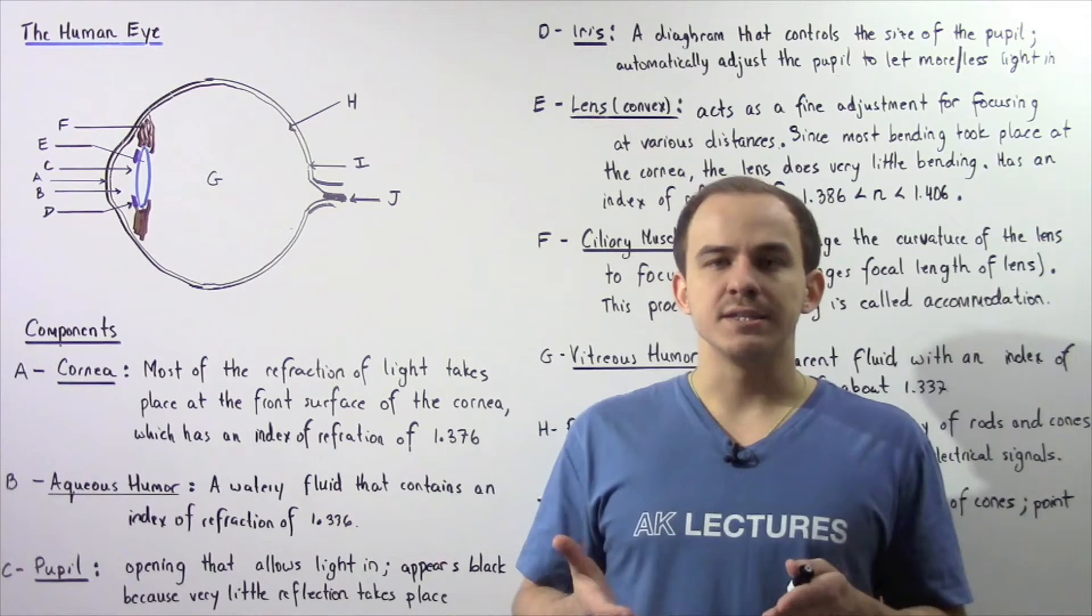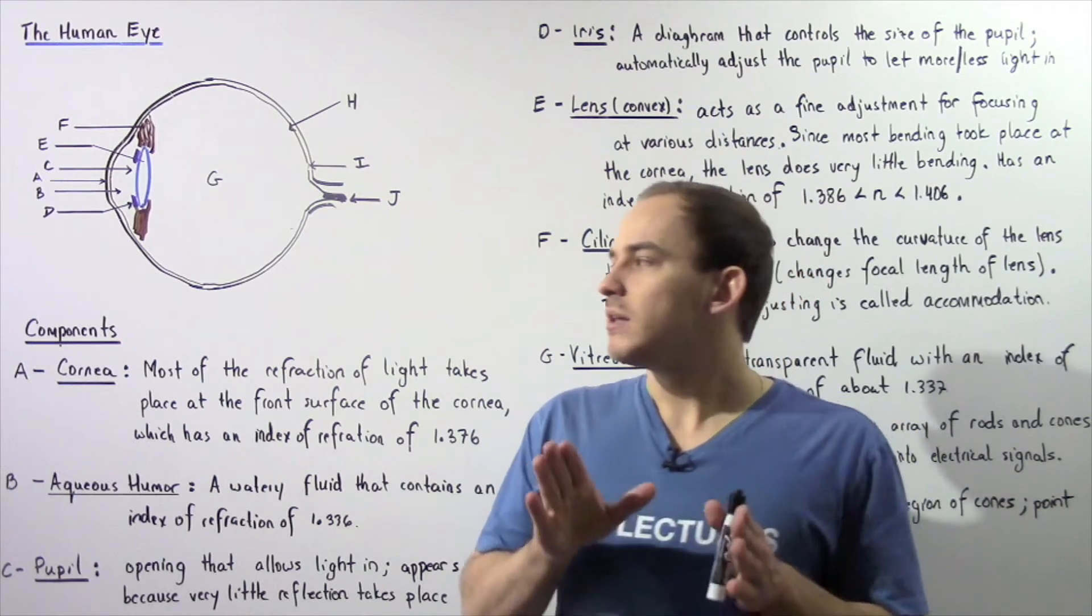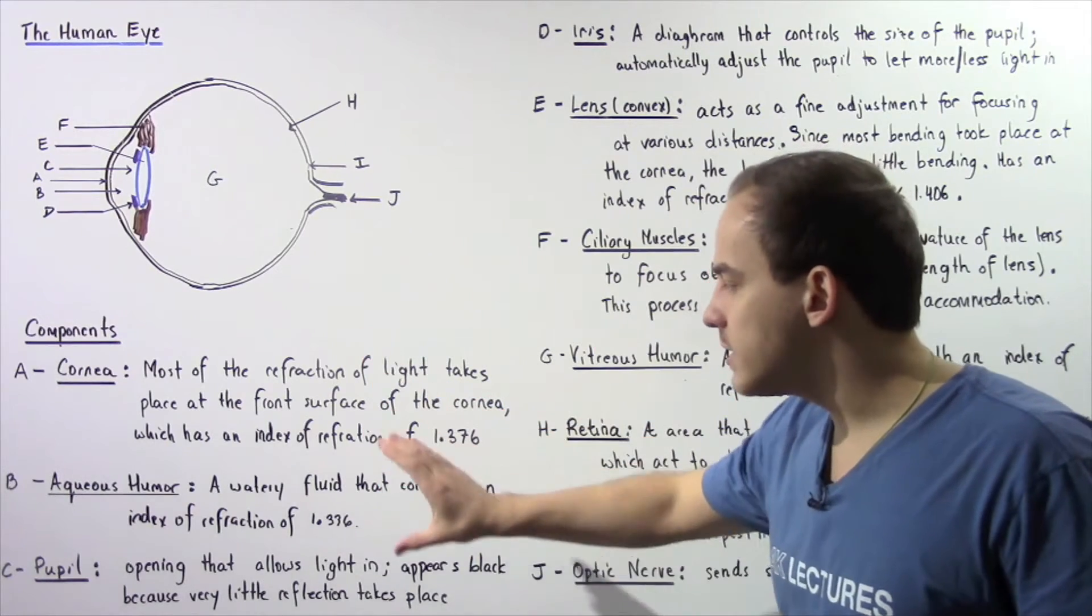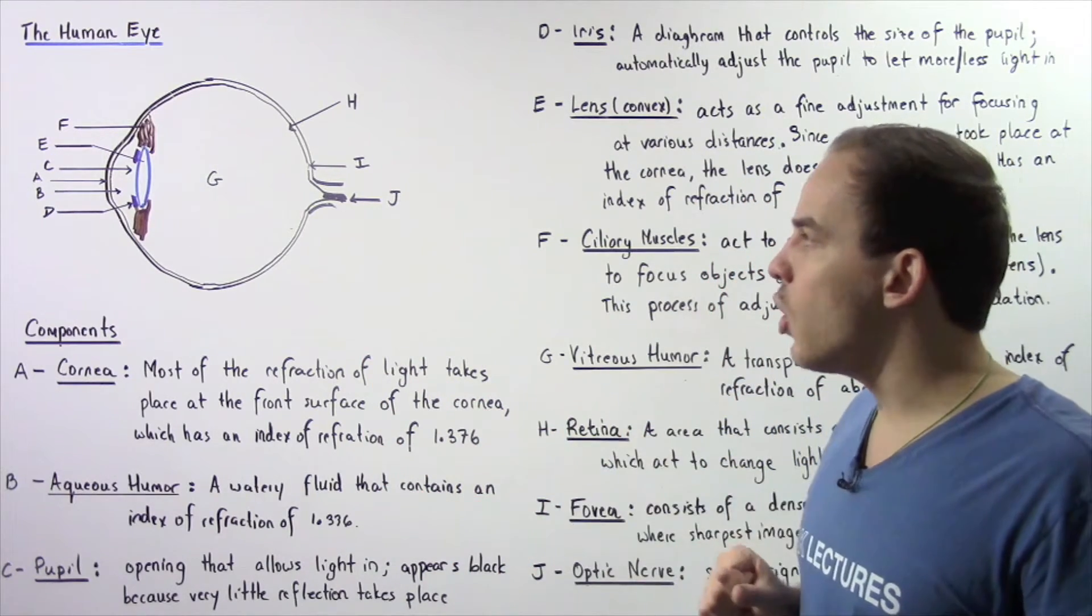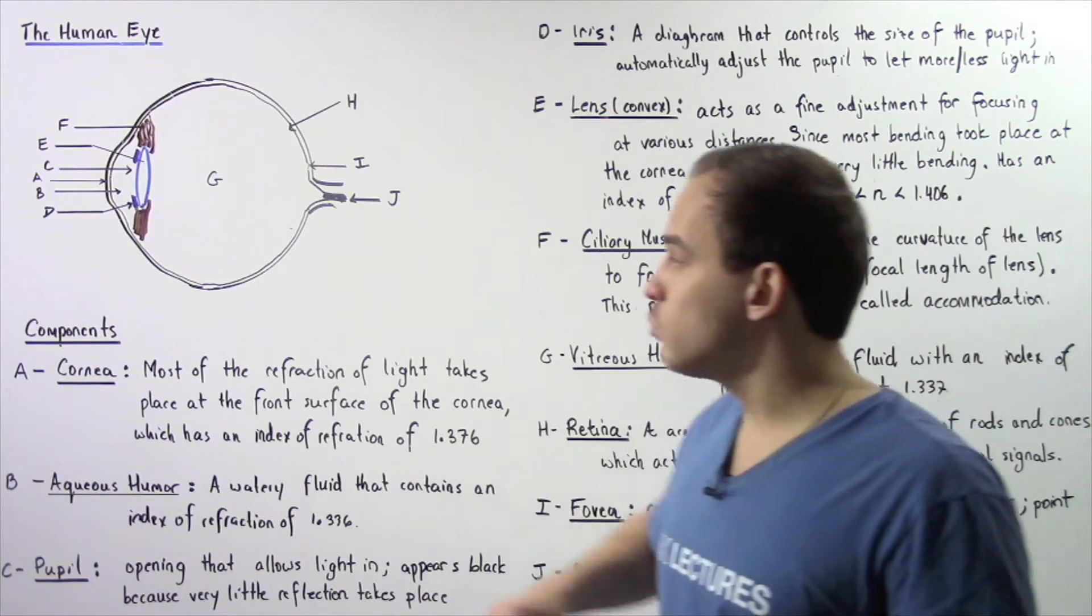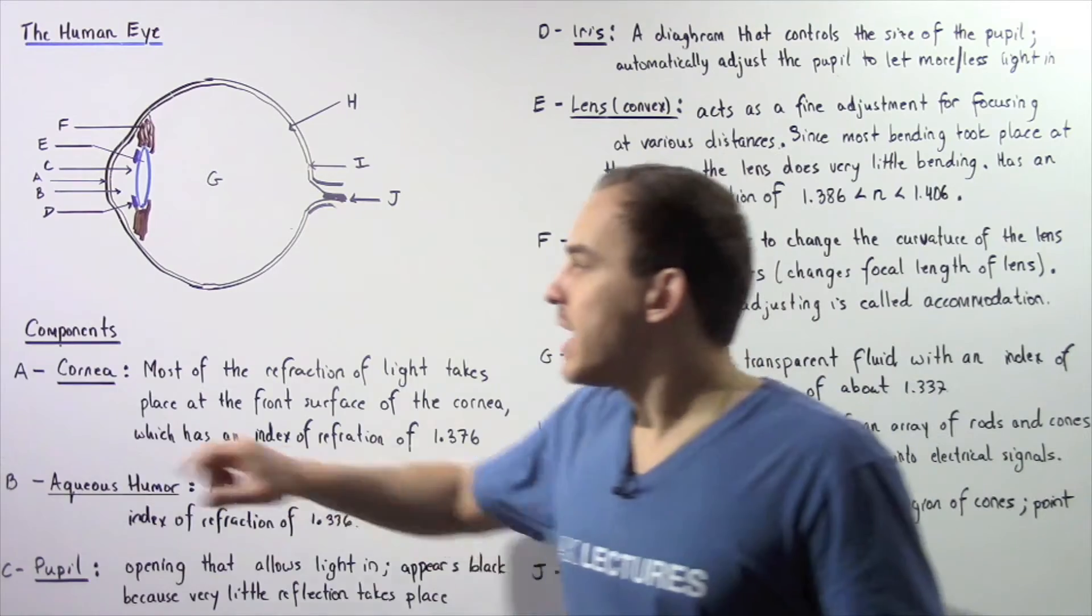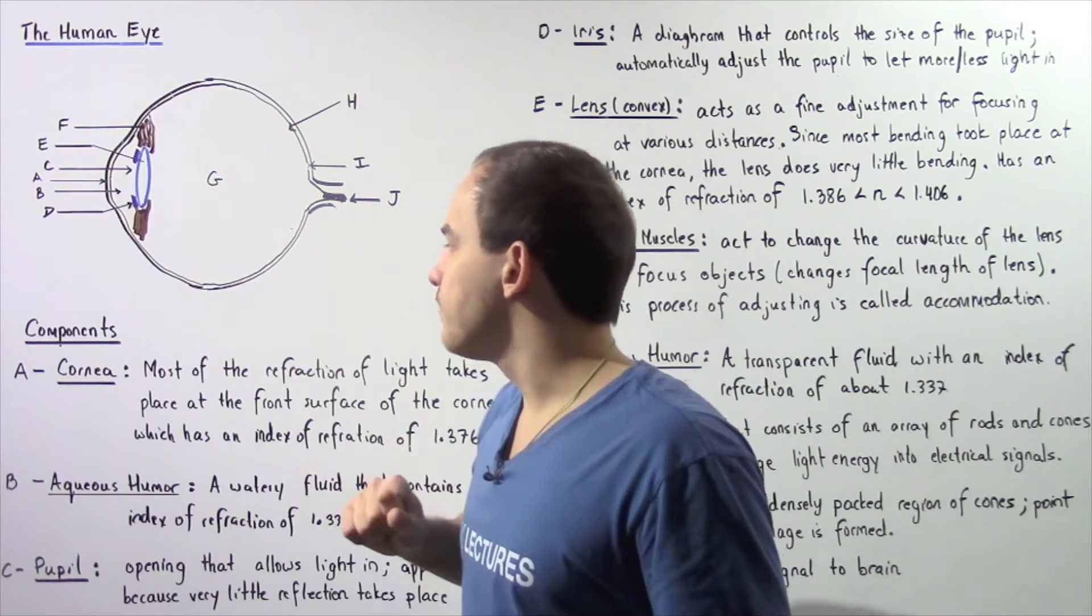Before we discuss the physics of the eye and before we examine corrective lenses, let's discuss the various important types of components that make up the human eye. And let's begin with the region of the eye known as the cornea, and that is shown by region A.